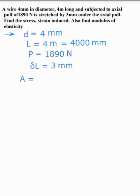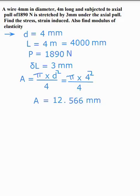First of all, calculate the cross-sectional area. The wire has a circular diameter, so for circular area it is pi d squared divided by 4. So pi times 4 squared divided by 4. The area is equal to 12.566 mm squared.